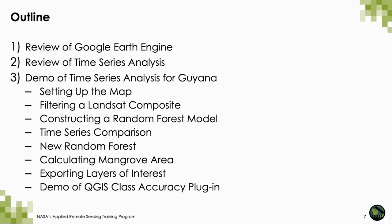We will go over how to set up our map and filter a Landsat composite, then construct a random forest model. We will then do a time series comparison with a new random forest classification. We will go through calculating mangrove area from our resulting maps, cover exporting layers of interest, and finally go through a demo of the QGIS class accuracy plugin to determine how accurate our resulting model is.